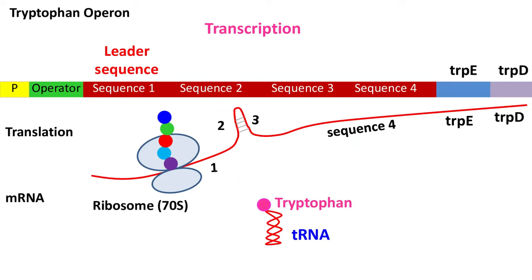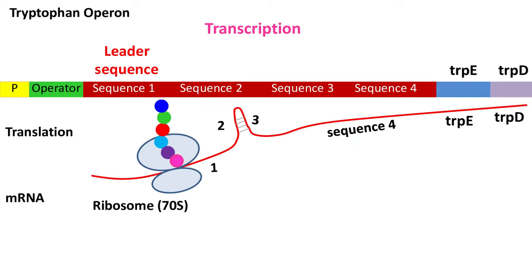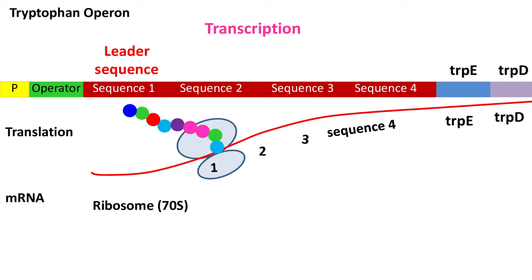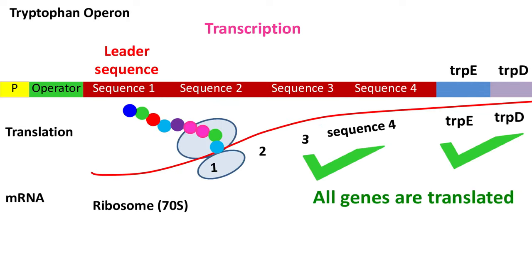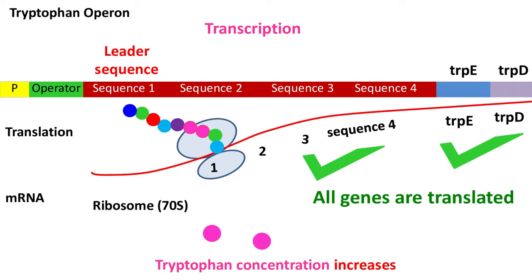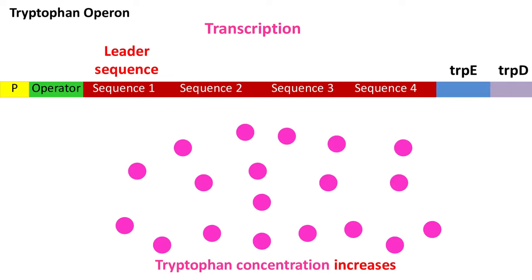When the tRNA carrying tryptophan reaches the ribosome, translation again starts. As all the genes are transcribed and translated, the enzymes required for the biosynthesis of tryptophan are synthesized. Now as the tryptophan is synthesized, its concentration in the cell increases, and as the concentration increases, the cell needs to stop the transcription of tryptophan operon.